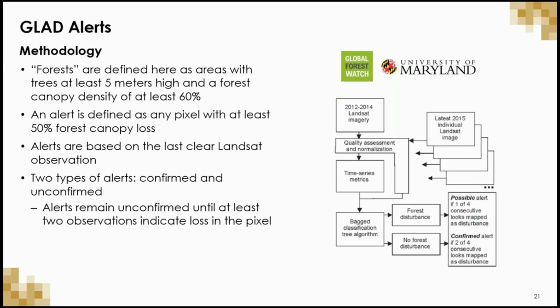The GLAD methodology defines forests as areas with trees of at least 5 meters high and canopy density of 60% or greater. An alert is defined as any pixel with at least 50% forest canopy loss, based on the last clear Landsat observations. To minimize false alerts, an alert remains unconfirmed until two or more out of four consecutive observations are labeled as tree cover loss. Alerts unconfirmed for more than 180 days are removed.